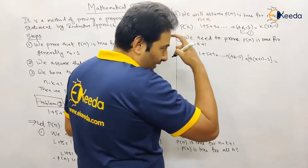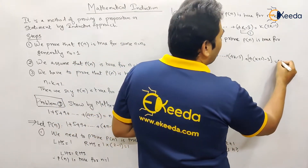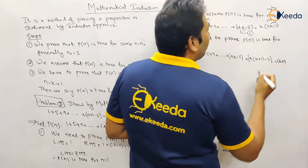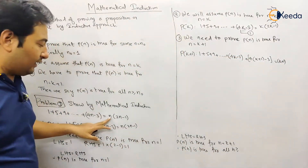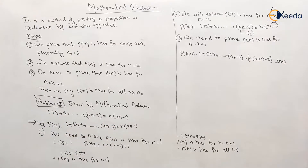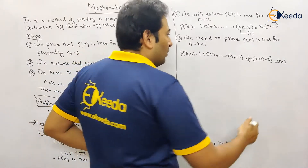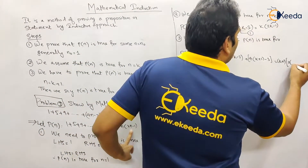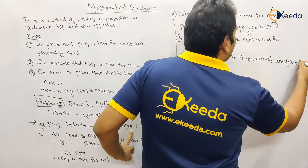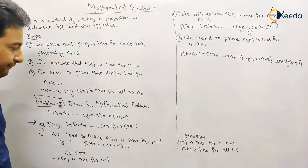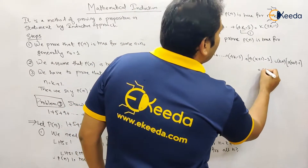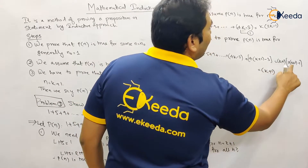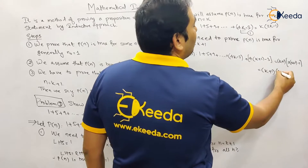On the right-hand side, replacing n with k + 1 gives (k + 1)(2(k + 1) − 1), which simplifies to (k + 1)(2k + 2 − 1) = (k + 1)(2k + 1). So the target RHS for n = k + 1 is (k + 1)(2k + 1).